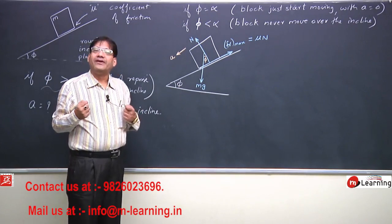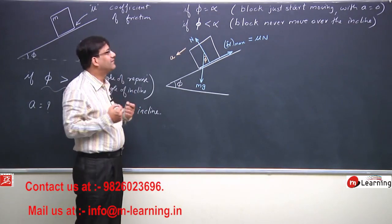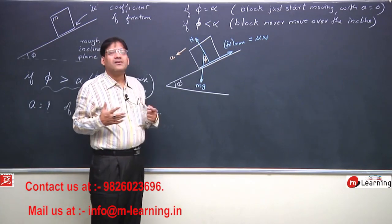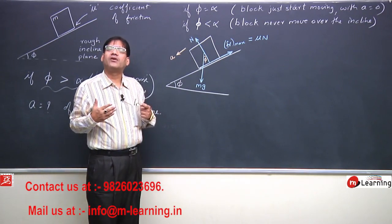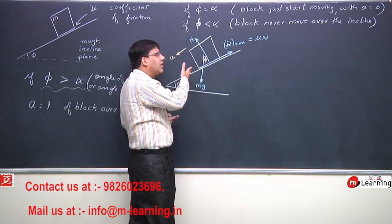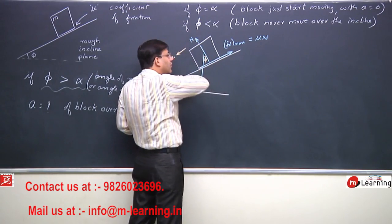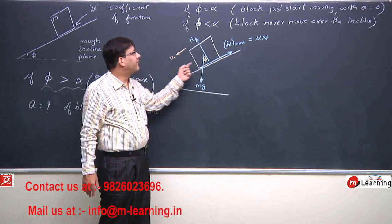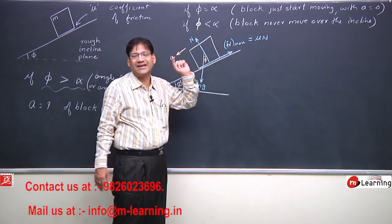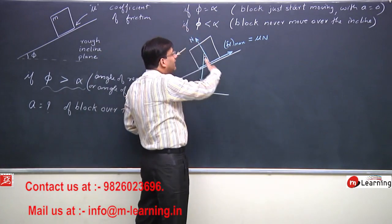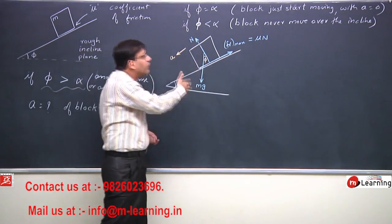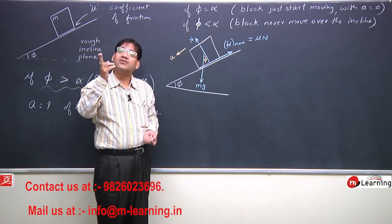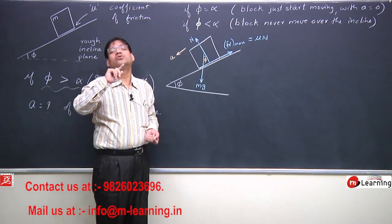Now, this is the complete free body diagram. I need to frame the equations. We choose two perpendicular coordinate axes: one perpendicular to the inclined plane and the other along the inclined plane. The normal reaction is already perpendicular to the inclined plane, and friction is already along the inclined plane. The gravitational force Mg is neither along nor perpendicular to the incline, so we resolve it along the two chosen coordinate axes.